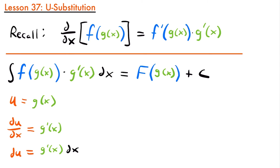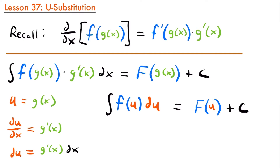What we get is the integral of f(u) du. We replaced g(x) with u, giving us f(u), and replaced g'(x) dx with du. The integral of f(u) du equals the antiderivative of f(u) plus c. We can then go back and replace u with g(x). When using u-substitution, you should only be integrating with respect to u — there should be no x variables anywhere in the integrand. The x variables come back after integration, when we replace u with what we originally set it equal to.